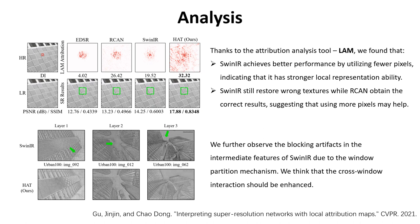First, SwinIR achieves better performance by utilizing fewer pixels, indicating that it has stronger local representation ability. Second, SwinIR still restores round textures while RCN obtains the correct results, suggesting that using more pixels may help.